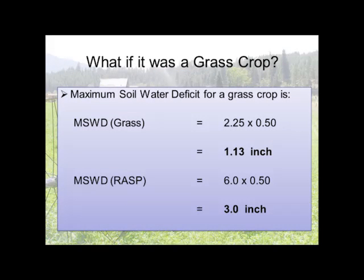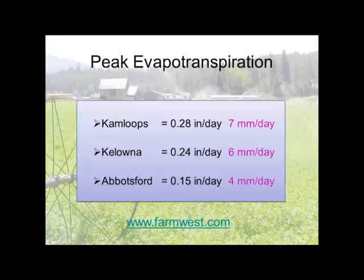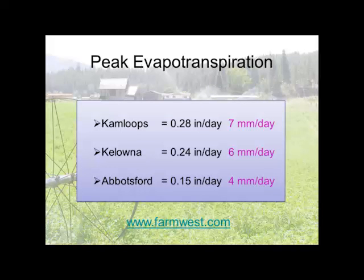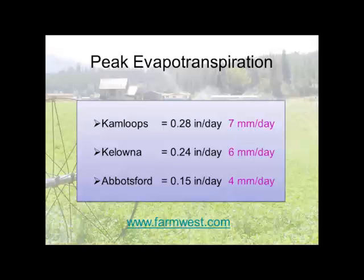Once we know how much water we can put in, we also need to know how fast it's going to be taken out of our gas tank. We're storing three inches in the case of raspberries — how quickly is that plant going to use it? That's a term called peak evapotranspiration. You'll see values for this on websites or in literature.